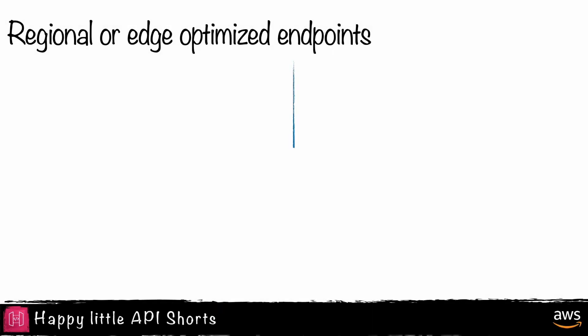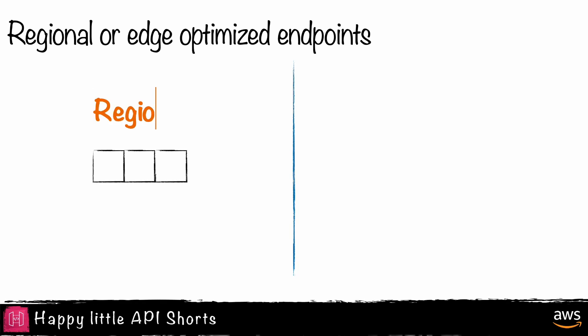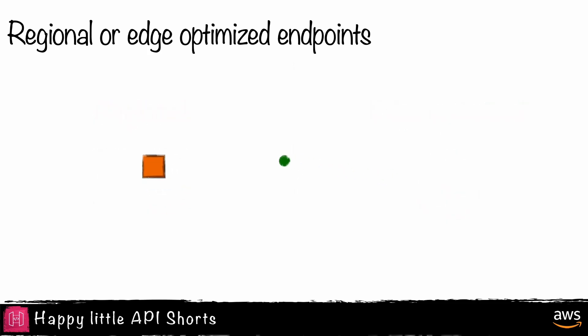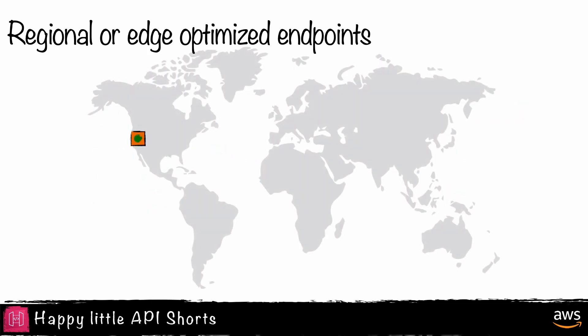When choosing a public REST API on Amazon API Gateway, developers can choose between a regional or an edge-optimized endpoint. This video clarifies the similarities and differences between these endpoint types so you as a developer can choose the right option for your work. It is important to understand that all API Gateway endpoints are regional.